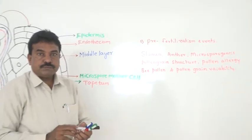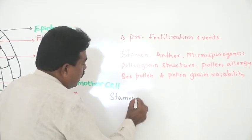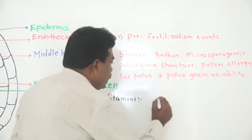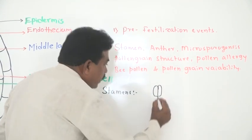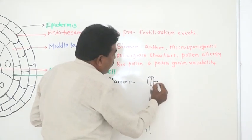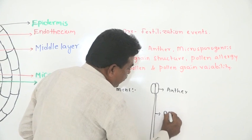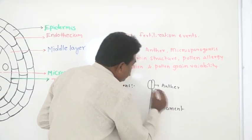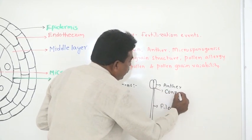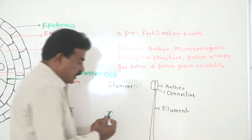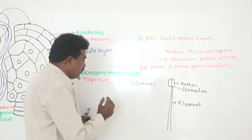As we know, the stamens are the units of the androecium. Structurally, they are composed of two anther lobes connected by a connective, and they have a stalk. That stalk is called the filament. This filament may attach to the thalamus or it may be attached to the base of the petals.